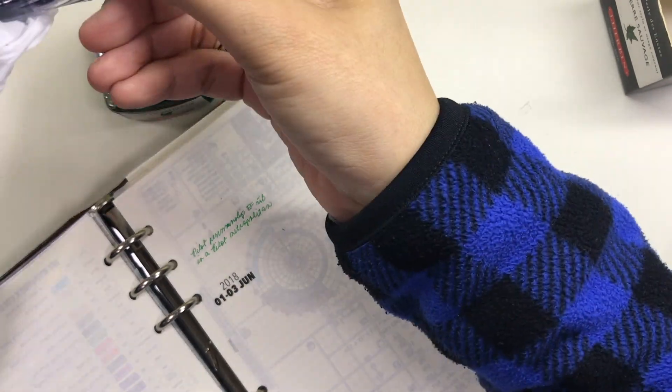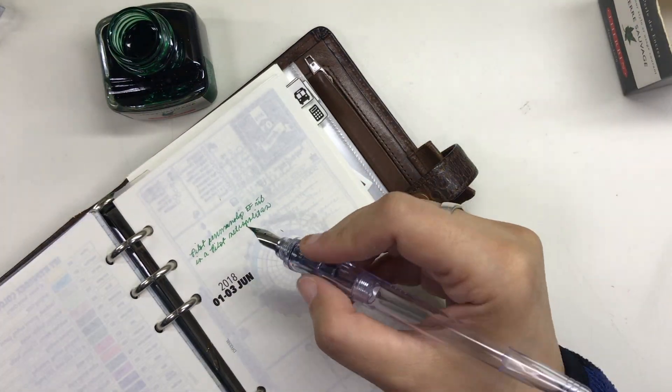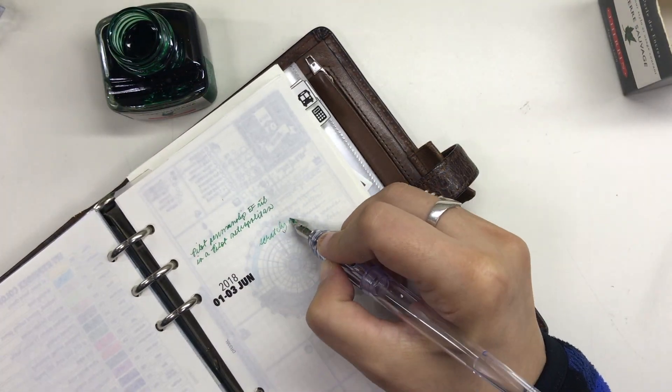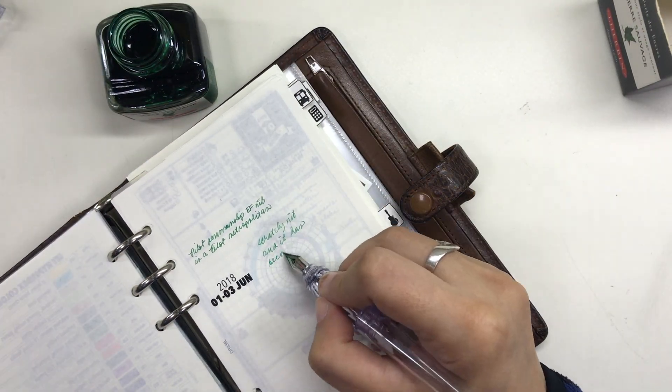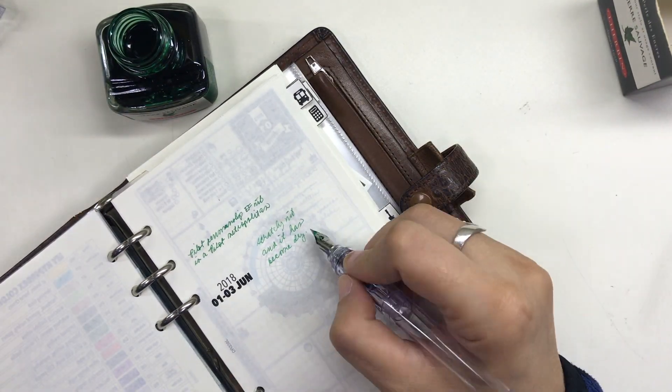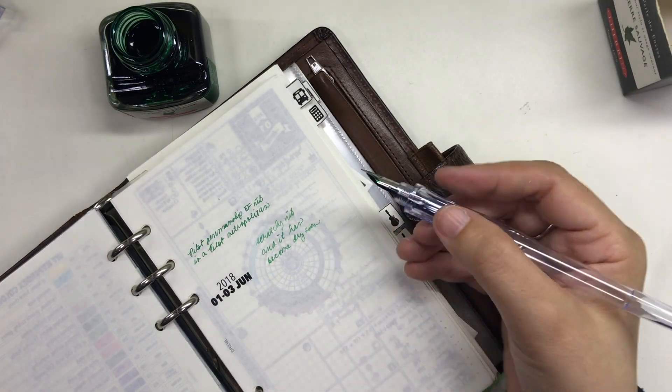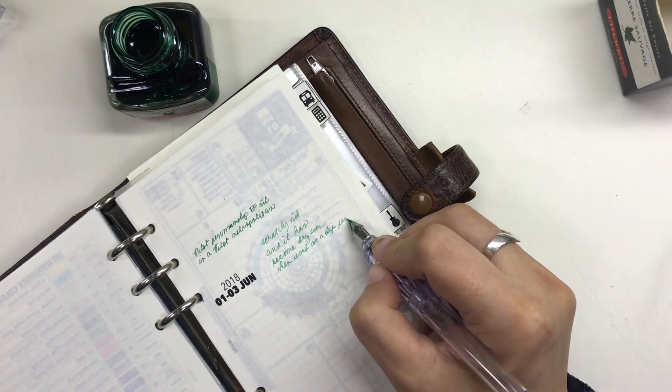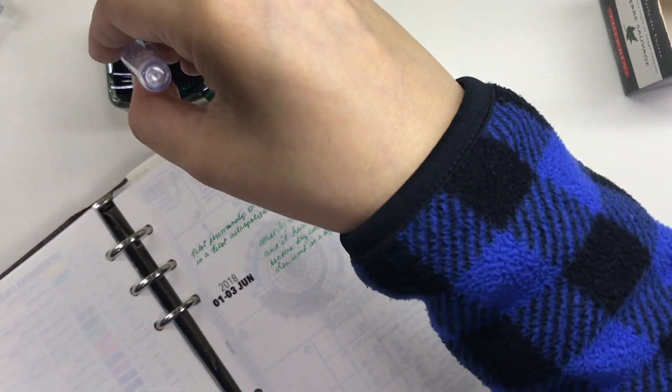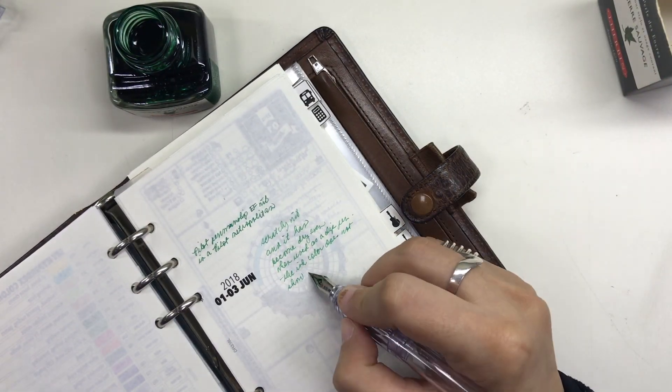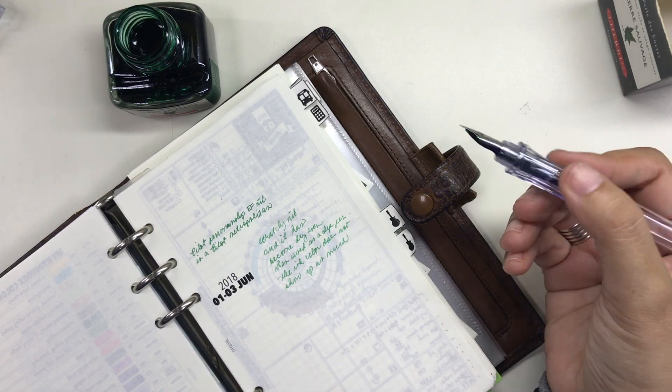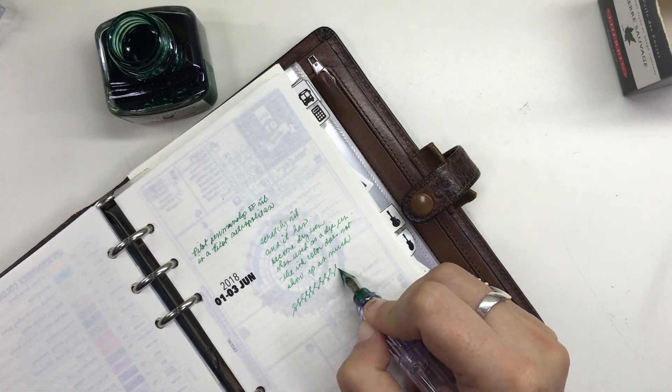In contrast, let me show you how my old Metropolitan fine nib writes. I dipped the nib into the ink and wrote with it on that same sheet or page of Tomoe River paper, and it really feels so scratchy and the nib writes dry unlike before. And the ink just looks so faded. And of course because the nib is broken—I accidentally bumped it into something I think.